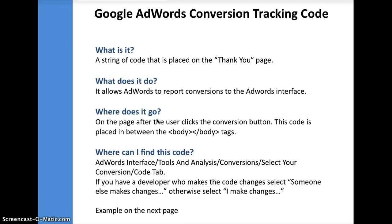For starters, the Google AdWords conversion tracking code is basically a string of code that is placed on the thank you page. This thank you page would be different whether it's an e-commerce page or a lead generation page. For lead generation, it would be the page right after the user presses the submit button. Once you place that code, it basically allows AdWords to report conversions to the AdWords interface, and it goes in between the body tags in the HTML code of your site.